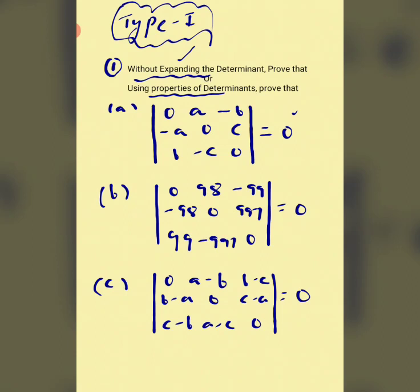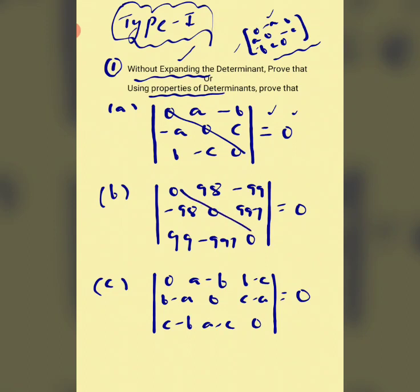Observe all the questions. If you look at the matrices, each one is a skew-symmetric matrix. A skew-symmetric matrix has diagonal elements equal to zero, and a_ij = -a_ji. For example, elements like negative one, two, negative one, three, negative three, one confirm this. The diagonal is all zero.